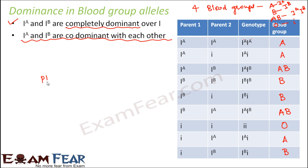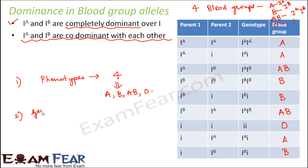If you look at the phenotypes, how many unique phenotypes are there? There are four unique phenotypes: A, B, AB, and O — the four blood groups seen in human beings. And if you look at genotypes, how many unique combinations are there? There are six unique genotypes: IAIA, IAI, IAIB, IBIB, IBI, and II.